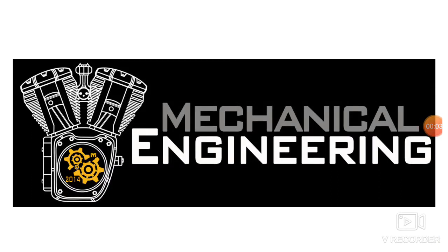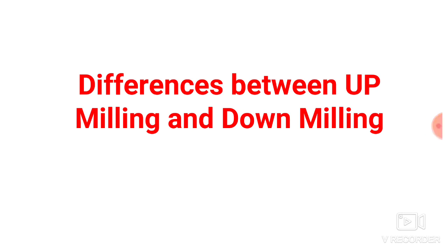Hello and welcome to Mechanical Engineering. Today in this video we are going to discuss the differences between up milling process and down milling process. So first we will understand the milling process. In milling, the material is removed by rotating a cutter against the workpiece. We clamp the workpiece over the table, the cutter rotates against the surface of the workpiece, and the material is removed. We can classify milling into two types: up milling and down milling.